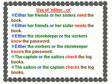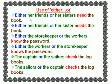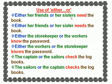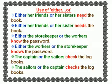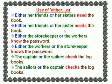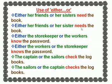Use of either/or. 'Either her friends or her sisters need the book.' When you use either/or, you have to choose between two subjects. Here both subjects are plural — friends, sisters — and the verb agrees with the subject closest to it: 'sisters need.' 'Either her friends or her sister needs the book' — the first subject is plural and the second is singular; the verb agrees with the subject closest to it: 'her sister needs.'